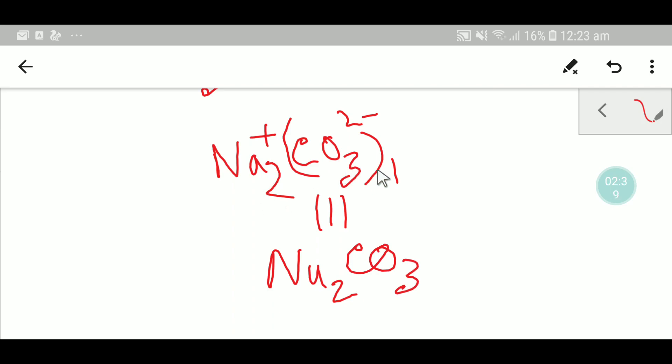Since this is 1, it has no value actually in writing. So we can write this: Na2CO3.